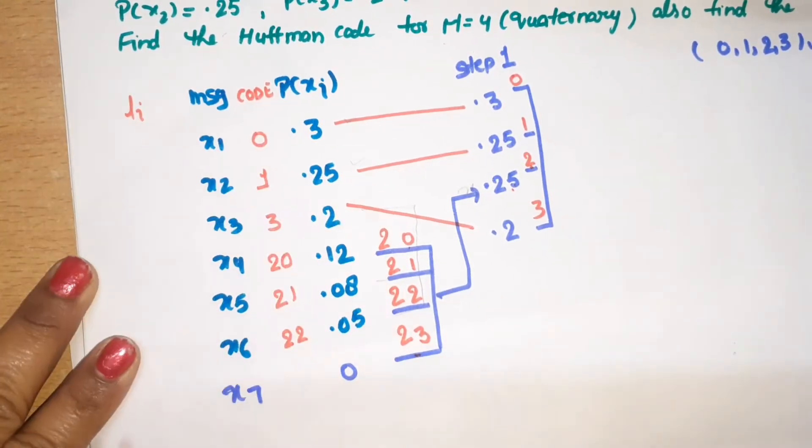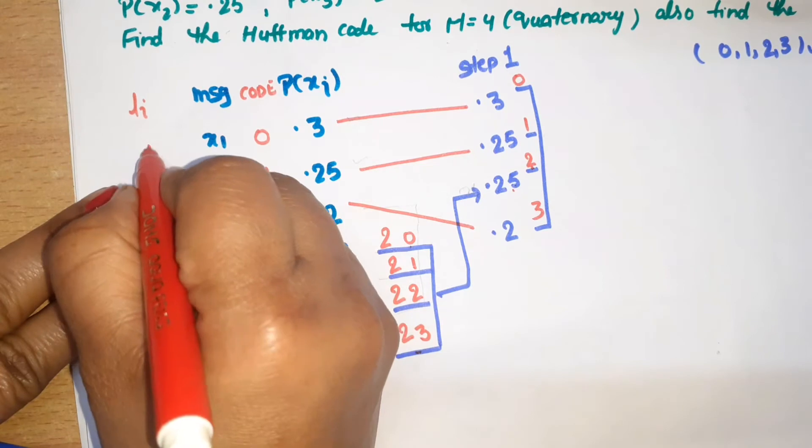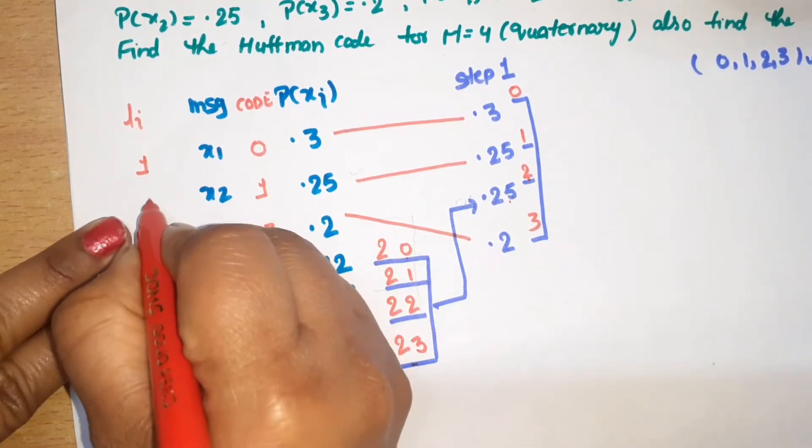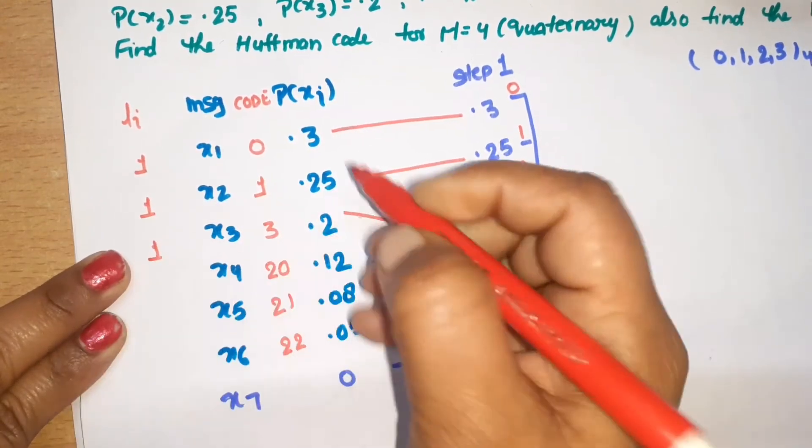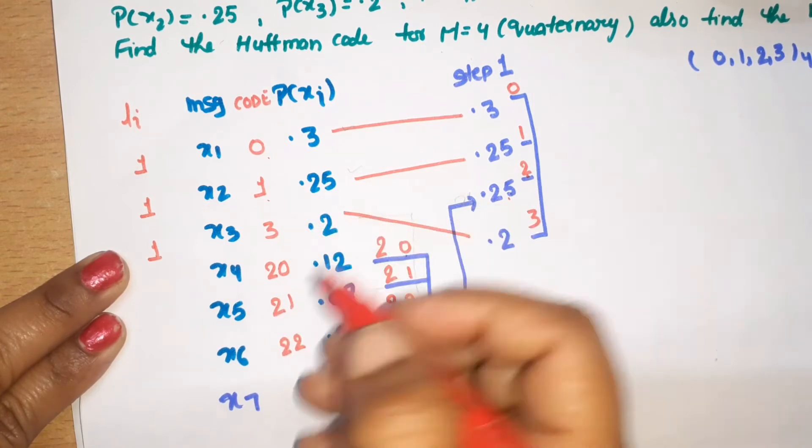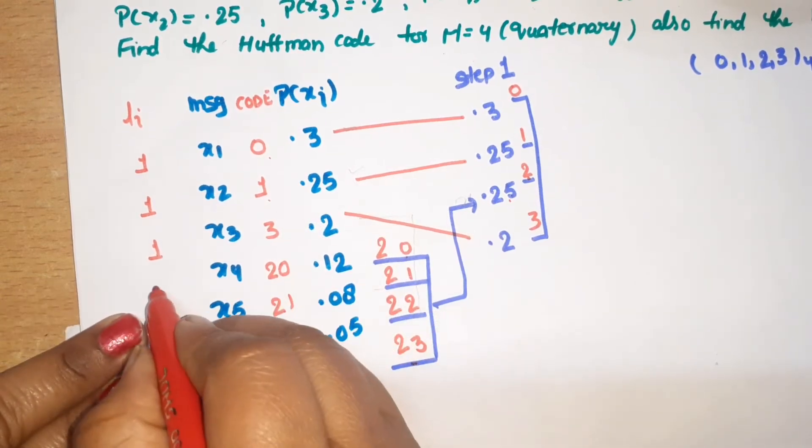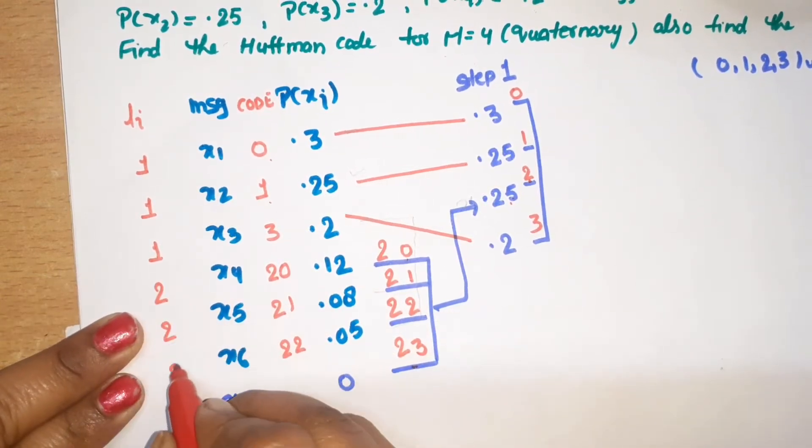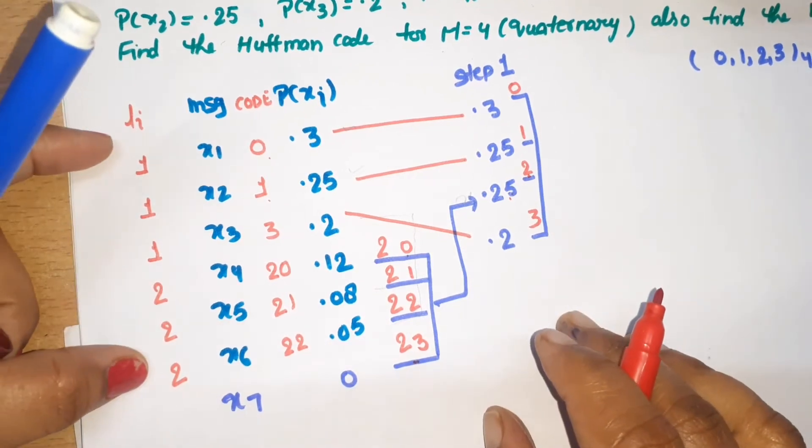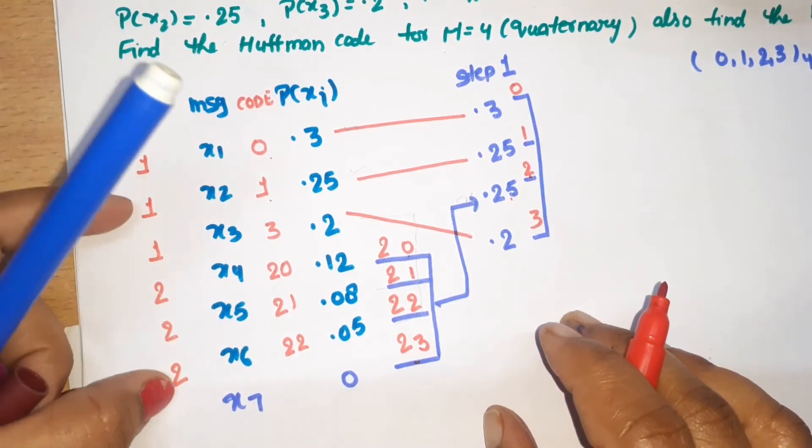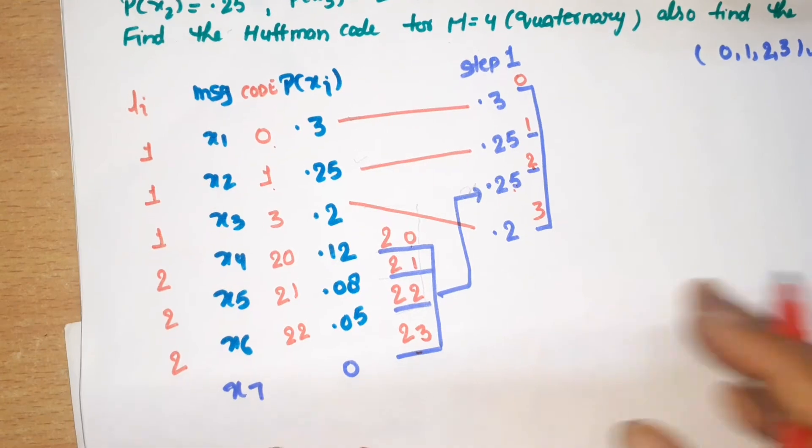Now we write the length, which is the number of bits. For message x1, the length is 1 bit, so length is 1. For x2, length is 1. For x3, also 1 because it's 1 digit. Here we have 2 digits, so the length will be 2, 2, 2. These are the lengths for individual messages, and these are the codes for individual messages.